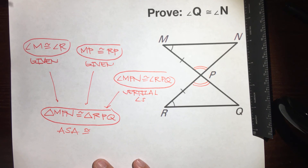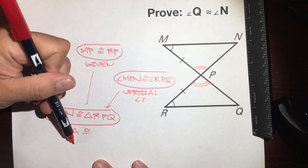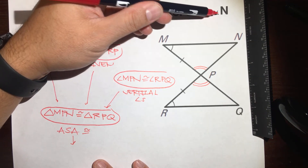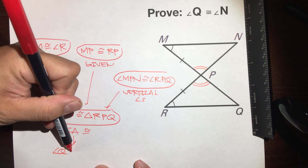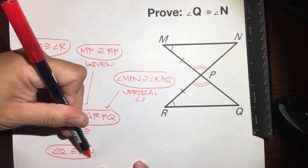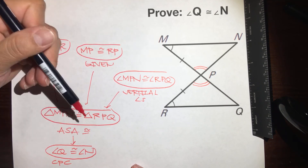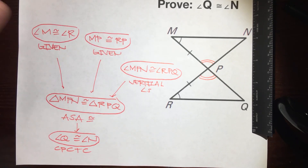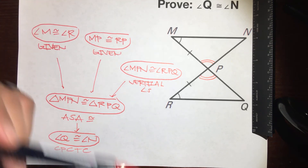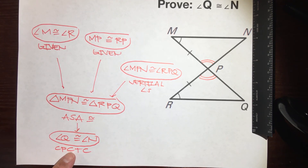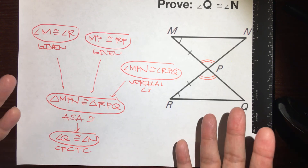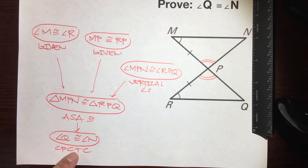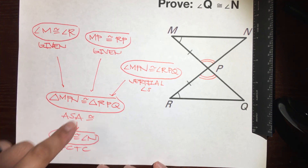The question asked us to prove angle Q is congruent to angle N. When triangles are congruent, all sides are congruent and all angles are congruent. Are these triangles congruent? Yes. So we can say angle Q is congruent to angle N, and the reason is: corresponding parts of congruent triangles are congruent — CPCTC. Remember: you can only use the power of CPCTC after you prove that the two triangles are congruent. Do that first, then use CPCTC.